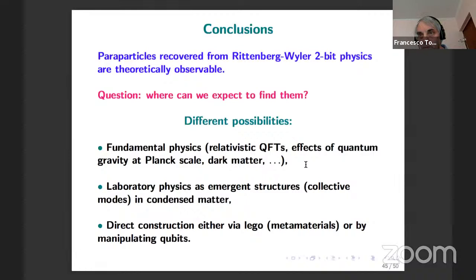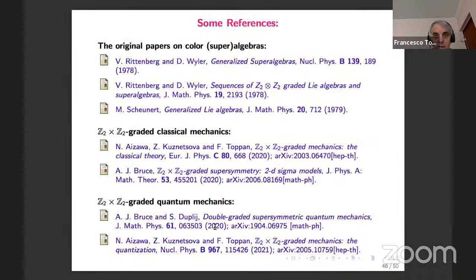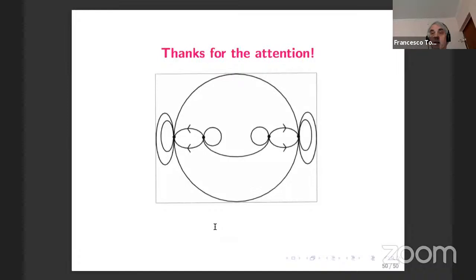This proves that the nine gradings existing for this single-particle Hamiltonian induce nine quantizations that are inequivalent at the multi-particle level. Z2×Z2 graded algebras and superalgebras give something that cannot be reconstructed with ordinary bosons and fermions. Possible applications: in fundamental relativistic physics, in condensed matter analogous to quantum Hall effect Hamiltonians, or in robotic metamaterials and qubit manipulation to produce these structures.